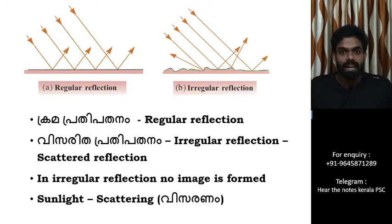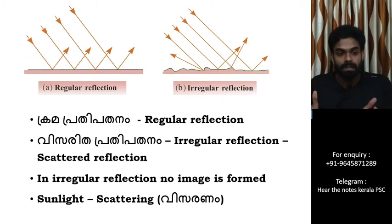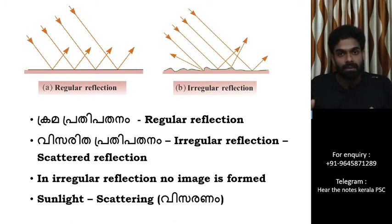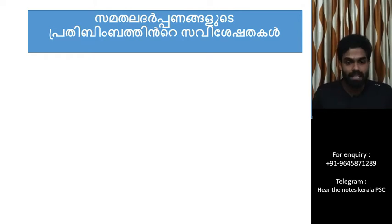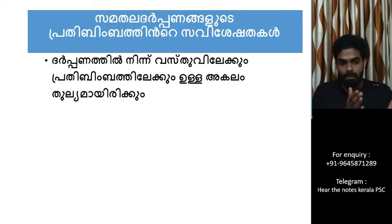Regular reflection occurs on a smooth surface, and irregular reflection occurs on a rough surface. It is not a regular reflection on a rough surface. These are the specialities of plane mirrors.